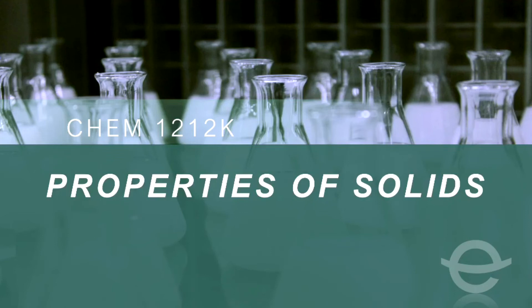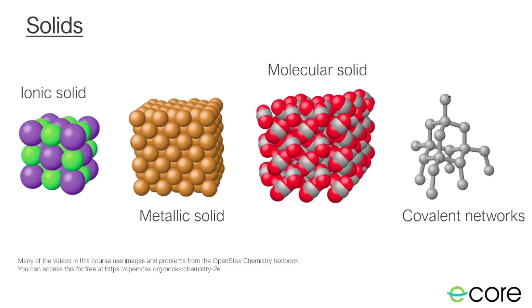Recently, we've been thinking about intermolecular forces and how those impact the properties of liquids, but now we're going to take a brief look at the properties of solids. We're going to look at four different types of solids. The first is ionic solids. These are things that are made of a bunch of ionic bonds — things like sodium chloride or potassium fluoride. Anytime you have an ionic compound and you have a bunch of it together, you're going to get an ionic solid.